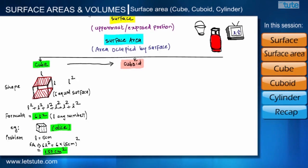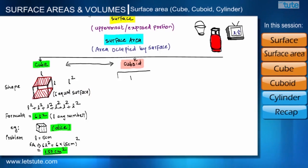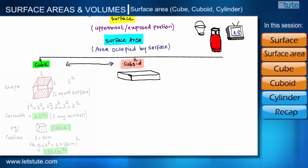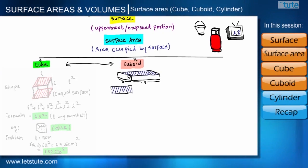Our second shape for this session is a cuboid. First, let us see the difference between a cube and a cuboid. A cube has six surfaces, all square-shaped. In a cuboid, all surfaces are rectangular, and only opposing surfaces are equal to each other. Suppose the length of this cuboid is L, breadth is B, and height is H.